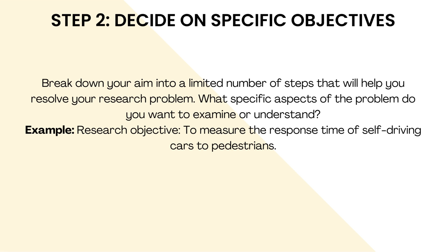Step two: decide on specific objectives. Break down your aim into a limited number of steps that will help you resolve your research problem. Ask what specific aspects of the problem do you want to examine or understand. Example research objective: to measure the response time of self-driving cars to pedestrians.